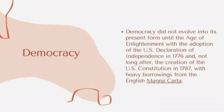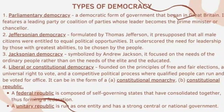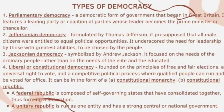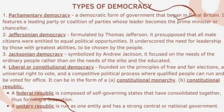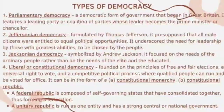Now let us move to the types of democracy. There are five types: parliamentary democracy, Jeffersonian democracy, Jacksonian democracy, liberal or constitutional democracy, and social democracy. Parliamentary democracy is the democratic form of government that began in Great Britain. It features a leading party or coalition of parties whose leader becomes a prime minister or chancellor — a form of democracy still used by Great Britain today, where government is headed by a prime minister.